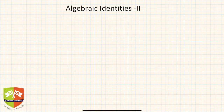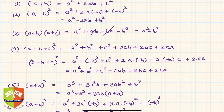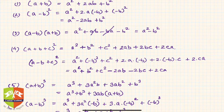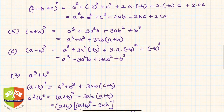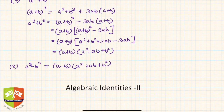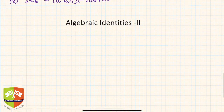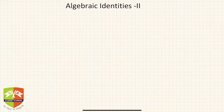Hello friends, welcome again. Let's continue the discussion on algebraic identities. Just to give you a quick recap, in the previous session we worked on identities: a plus b whole square, a minus b whole square, a plus b plus c whole square, a plus b whole cube, a minus b whole cube, a cube plus b cube, and a cube minus b cube. You can go through the previous session for a quick recap. Now let's continue our journey with identities.